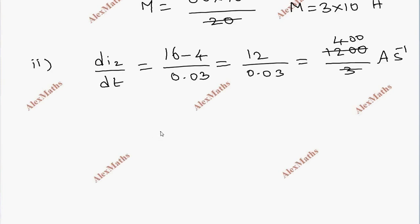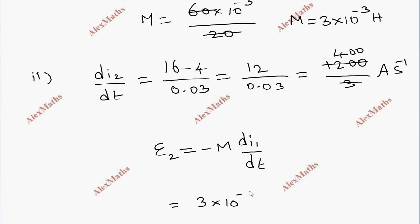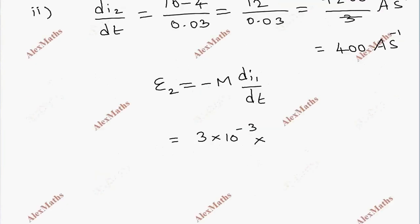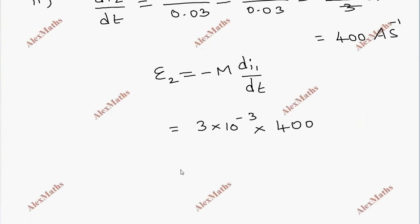Induced EMF formula: minus M into di1 by dt. This is the value, we'll substitute: 3 times 10 power minus 3 times 400 amperes per second. If 4 times 3 is 12, it will be 12 times 10 power minus 3.